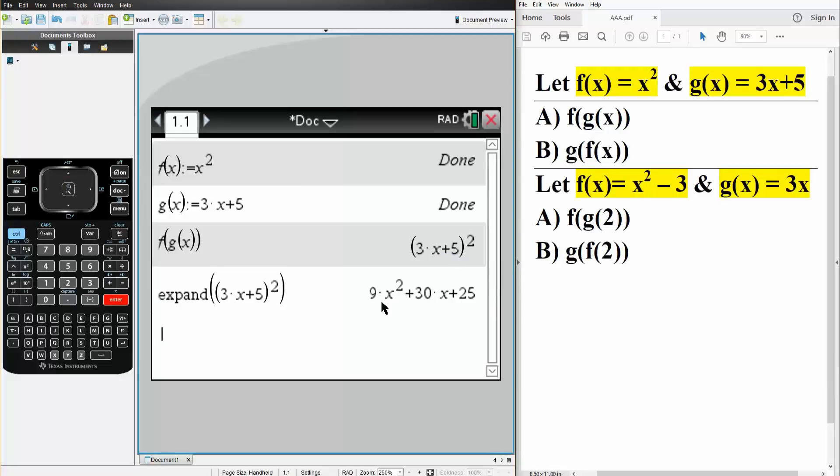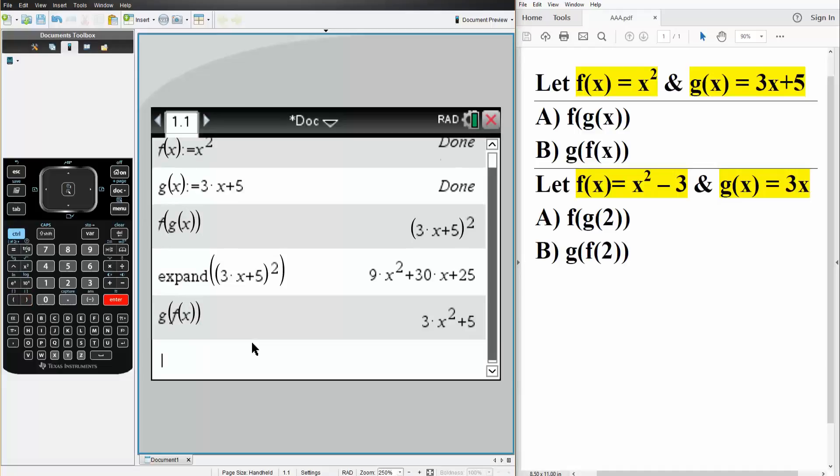And now we'll do part b. So that's g parentheses f parentheses x. So it's identical to what we have here. We simply hit enter, and the answer is 3x squared plus 5.